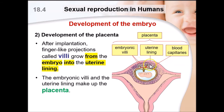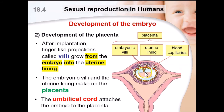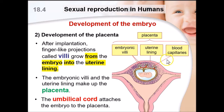All three structures — the embryonic villi, the blood capillaries, and the uterine lining — form the placenta. The placenta is an organ in the mother's womb. The umbilical cord is not part of the placenta; it connects the placenta to the fetus. Just like the pollen tube delivers the male gamete to the female gamete, the umbilical cord is the bridge that allows substances exchanged in the placenta to reach the fetus.